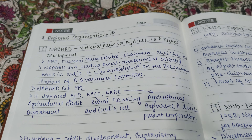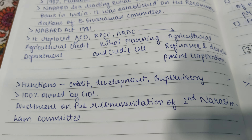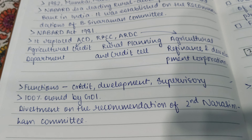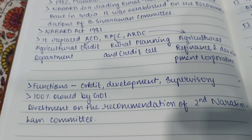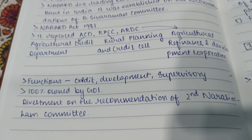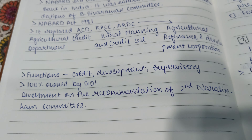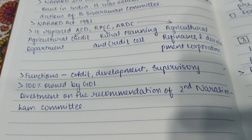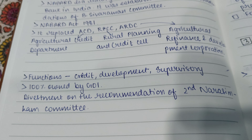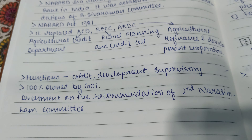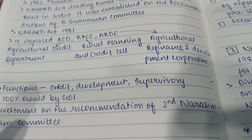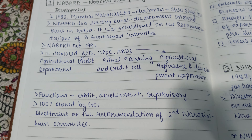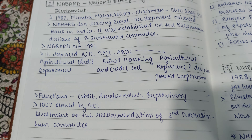NABARD's functions include providing credit for agriculture and rural development, and also supervisory functions. It is now 100% owned by the Government of India. Disinvestment was made on the recommendation of the Second Narasimham Committee. Earlier it was held by RBI, but now it is owned by the Government of India.